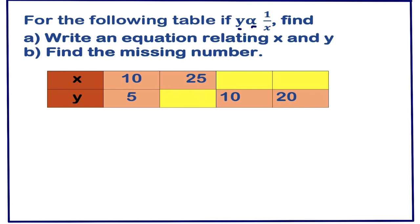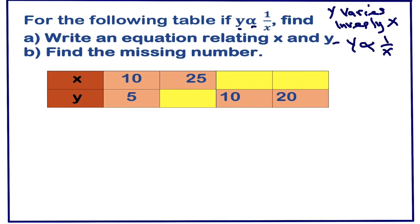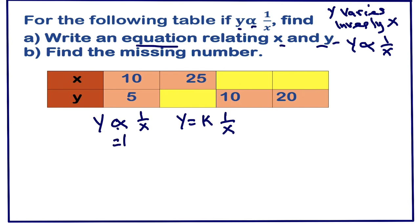We have y varies inversely as x, which is the same as y varies inversely at x, or y is inversely proportional to x. So we write it in this format: y is proportional to 1 over x. To write an equation, we change the proportionality symbol to equals and add the constant k, giving us y = k times 1 over x.